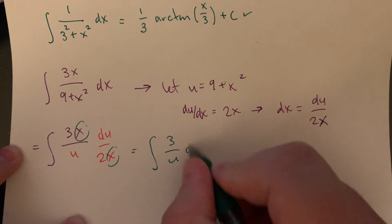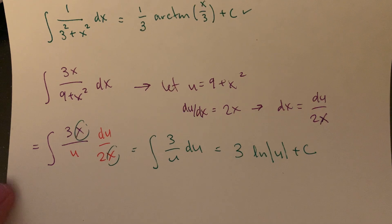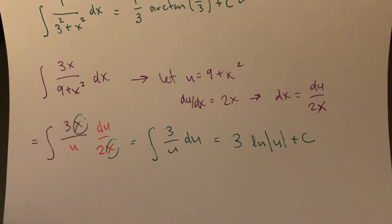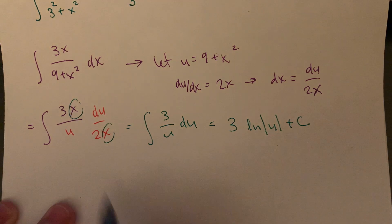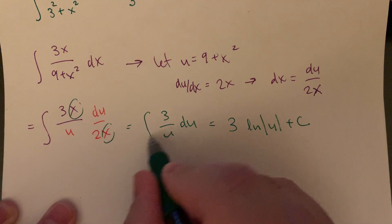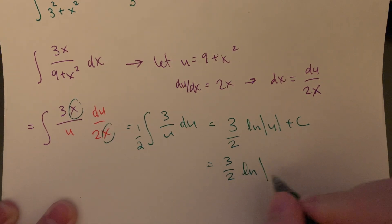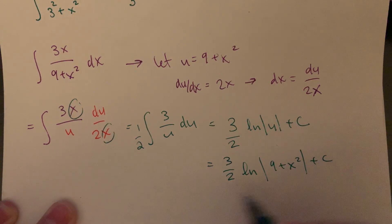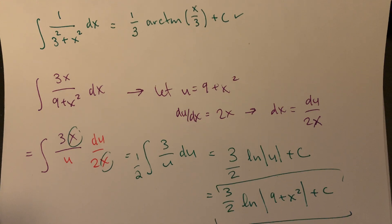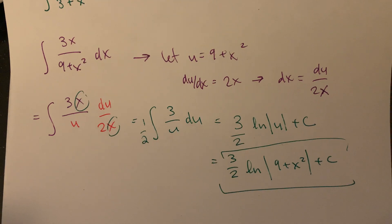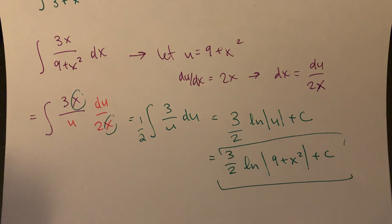The x's cancel, so this becomes three over two times the integral of one over u du, which is just three-halves times the natural log of the absolute value of u, plus C. This is a standard natural log integral where the numerator is essentially a version of the derivative of the denominator. Substituting back, the answer is three-halves times natural log of nine plus x squared, plus C. That's a really different approach than the arctan one.